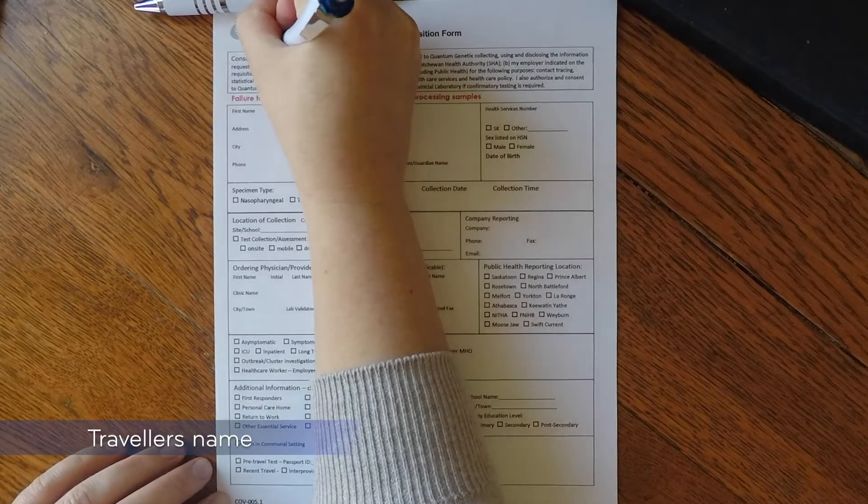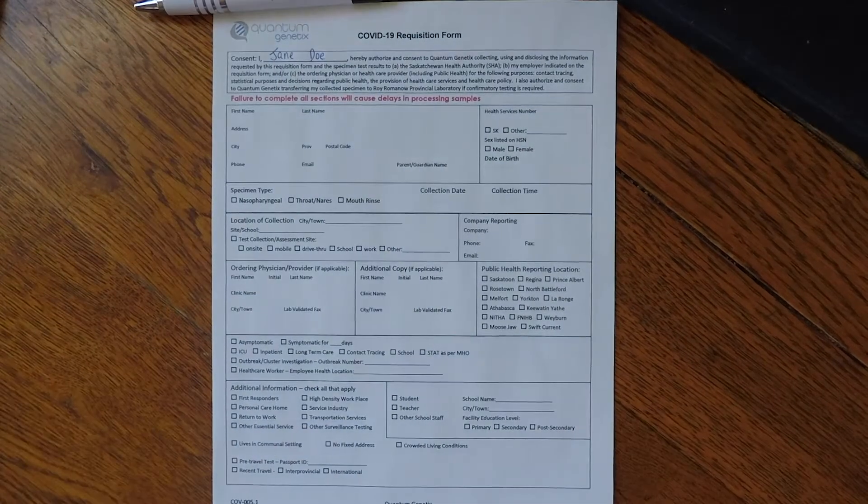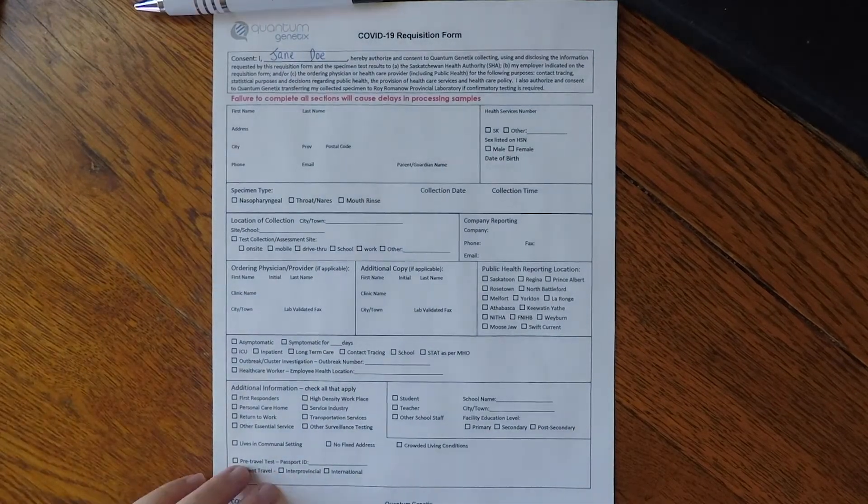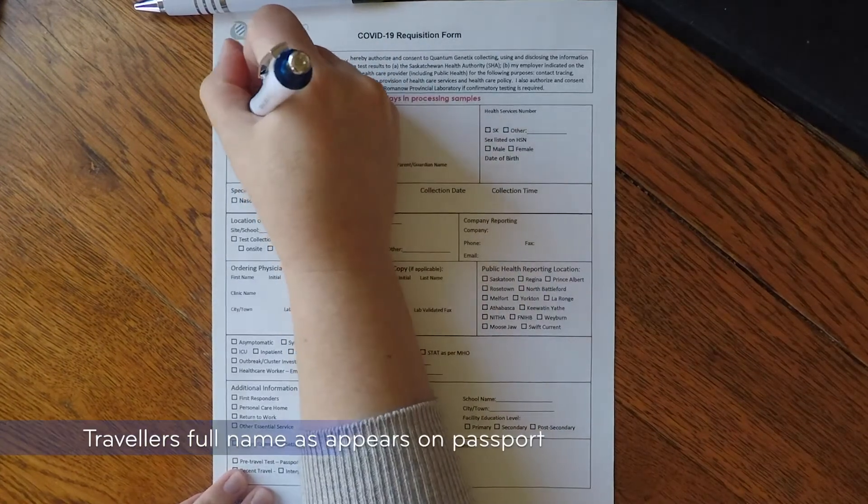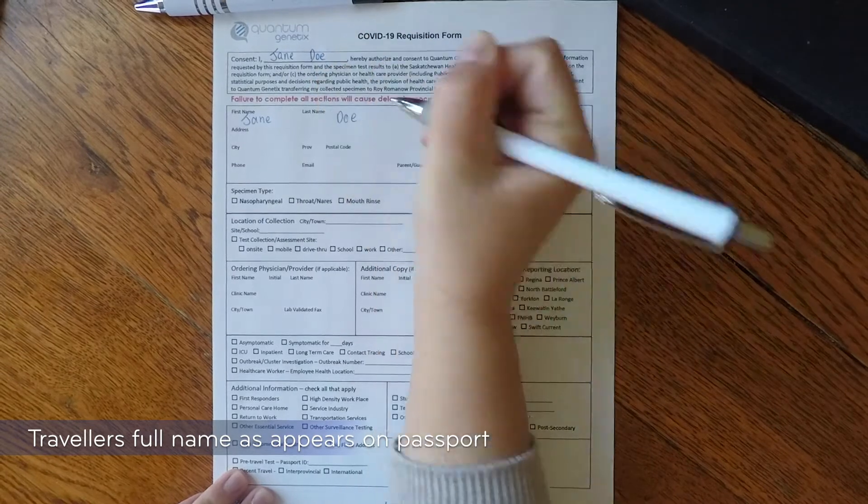Print your name clearly at the top of the requisition form. Then begin to fill in your first, last and any middle names shown as it is on your passport for travel use.